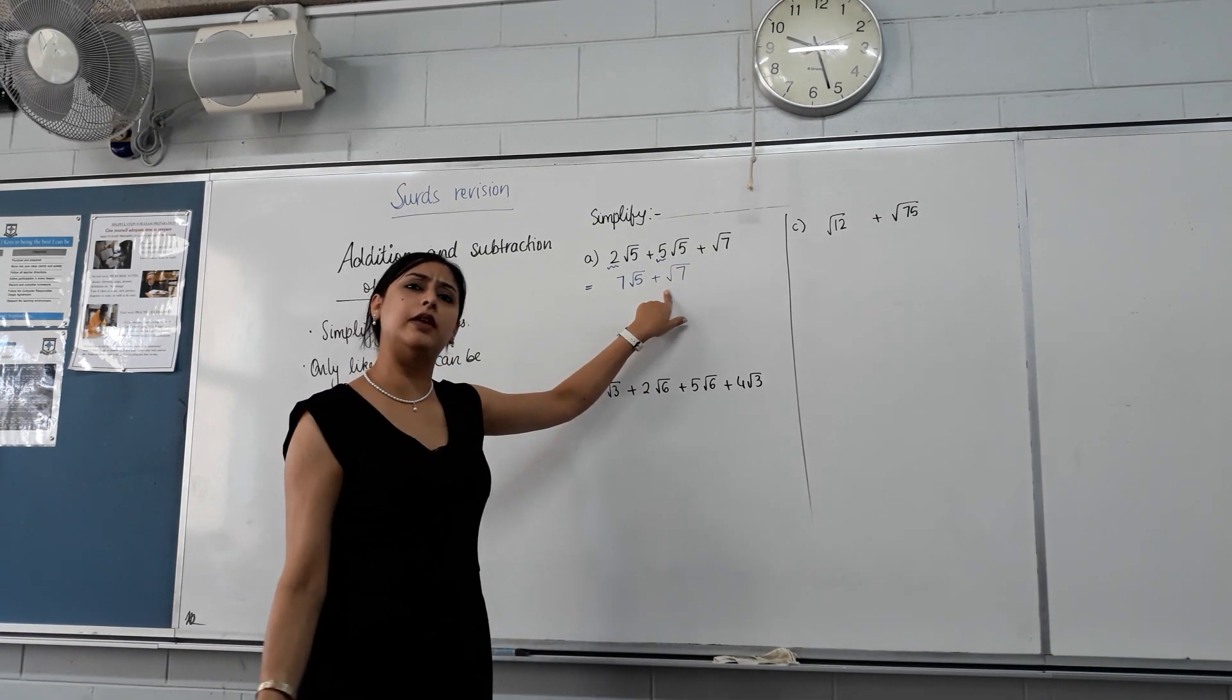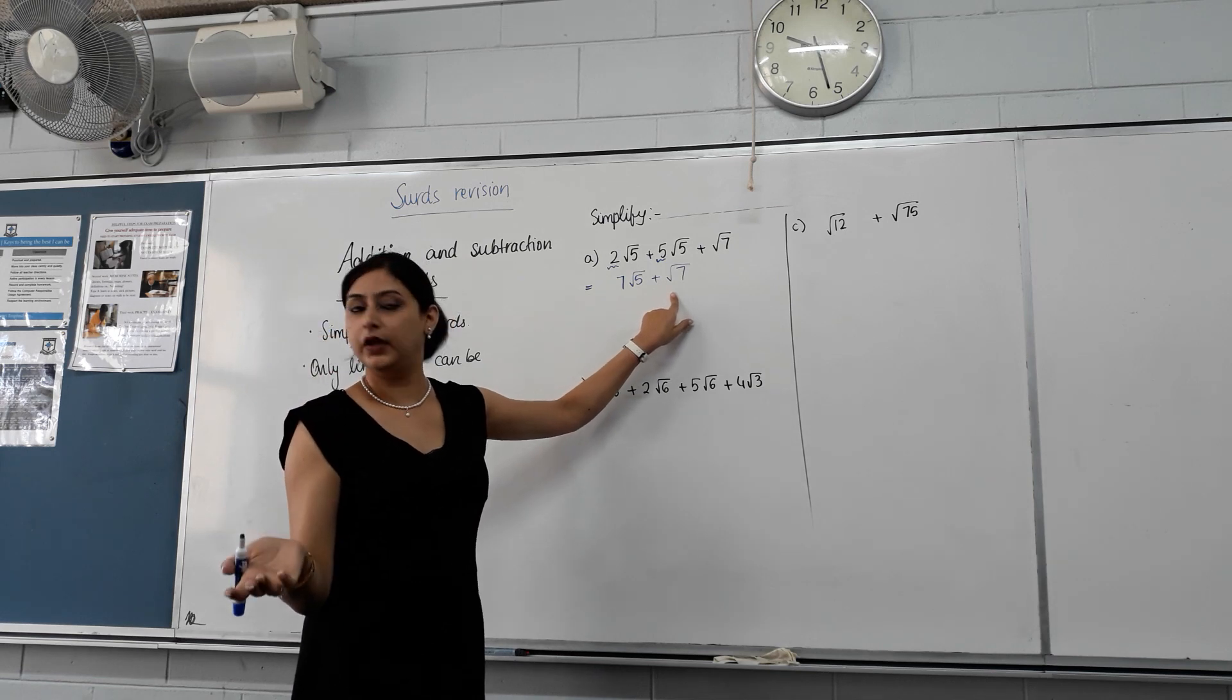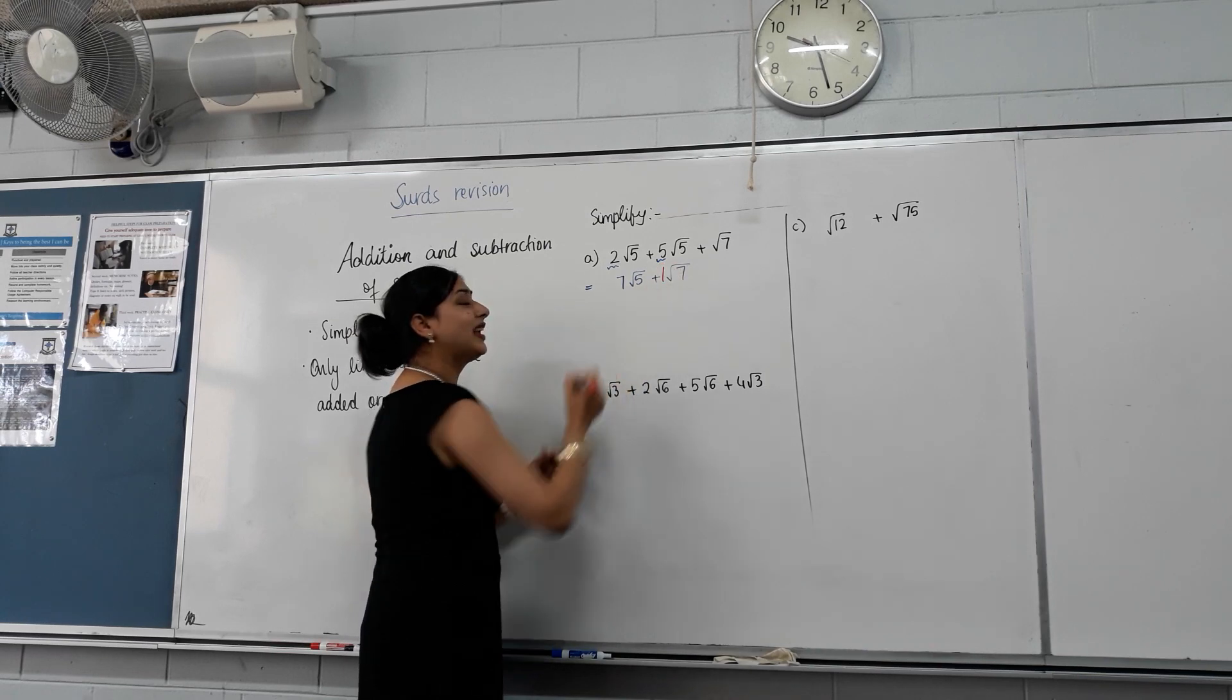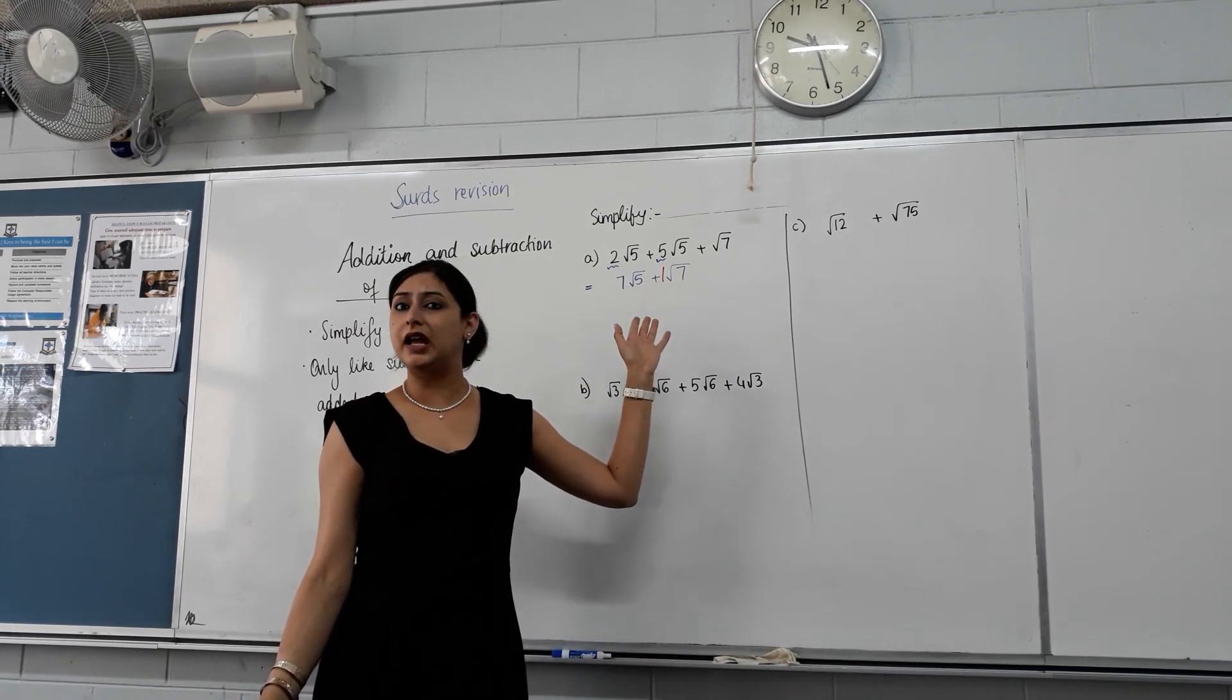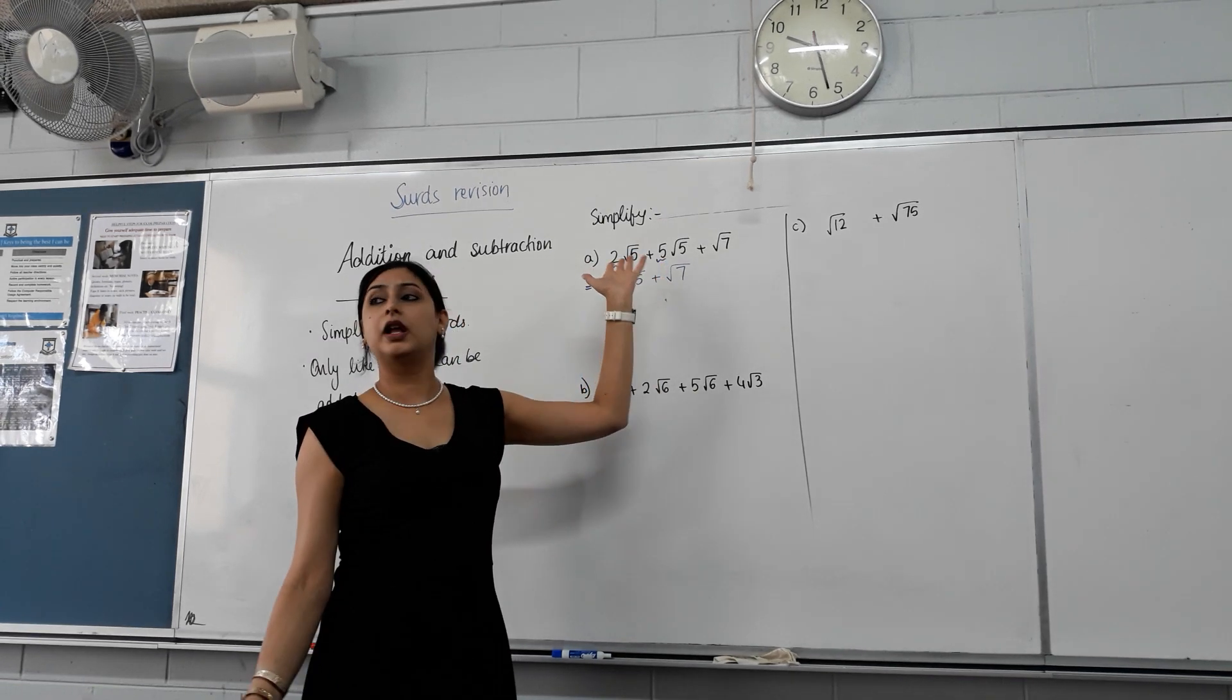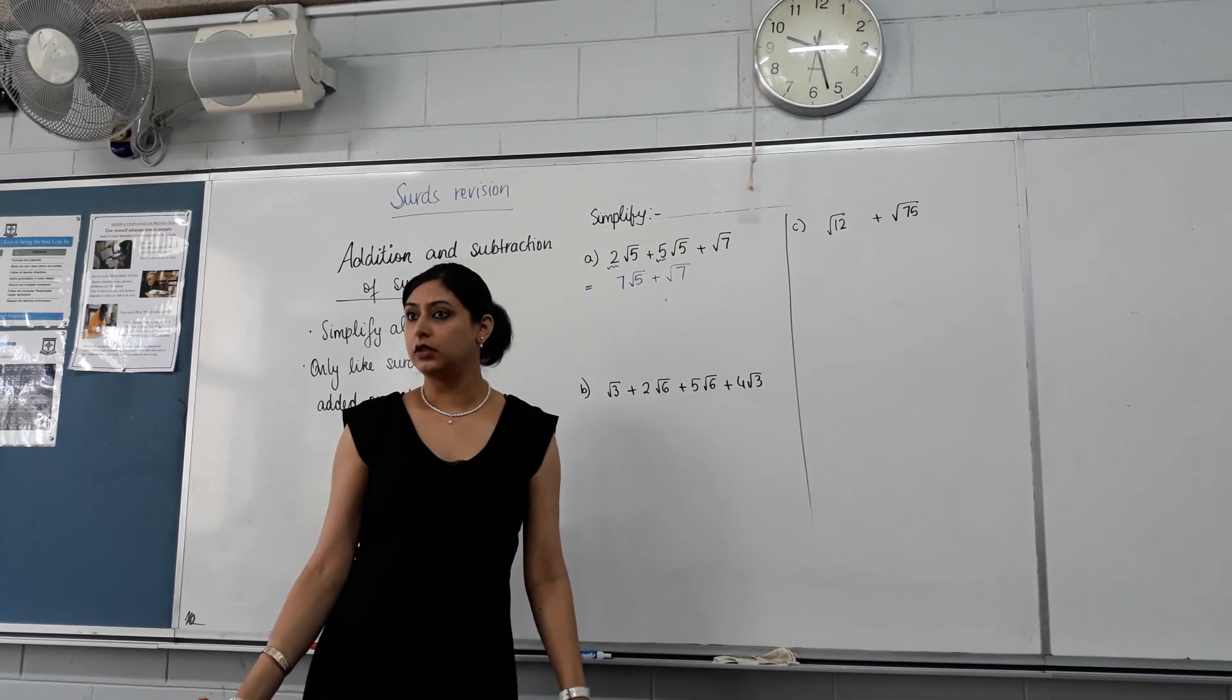Now, what does it mean by root seven? How many root sevens do I have? One. So if there is nothing, it means there's one root seven. We can write one root seven, but it looks ugly. So we make things prettier in maths, and we don't write things we don't need. It's assumed that we know it's just one root seven. We don't have to write it.